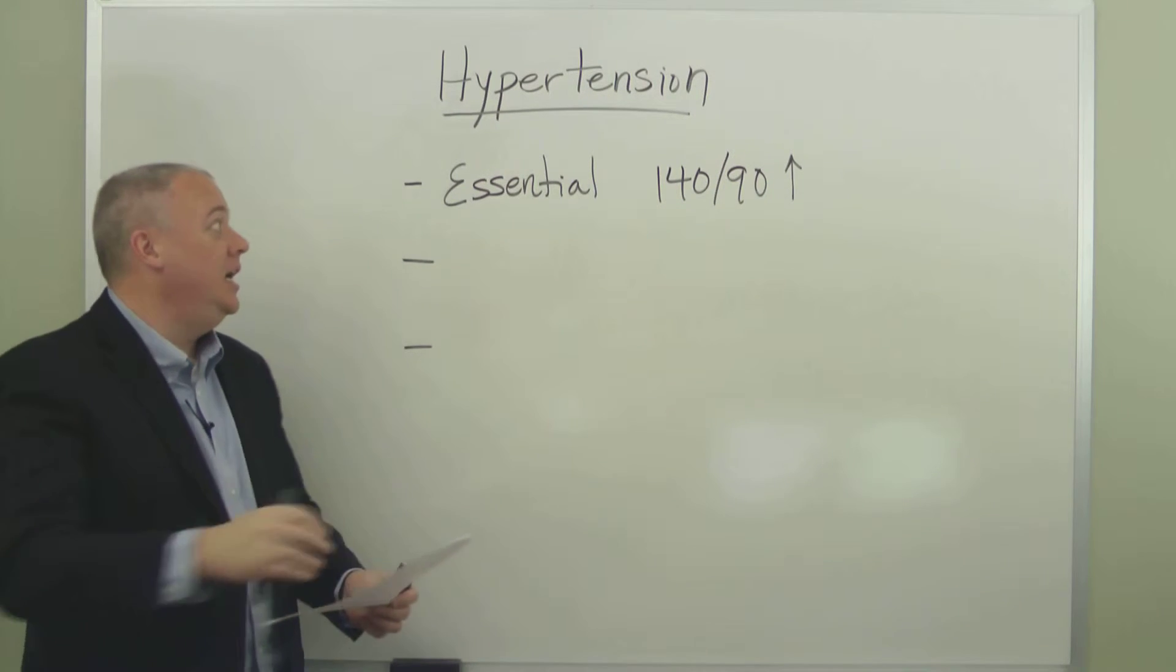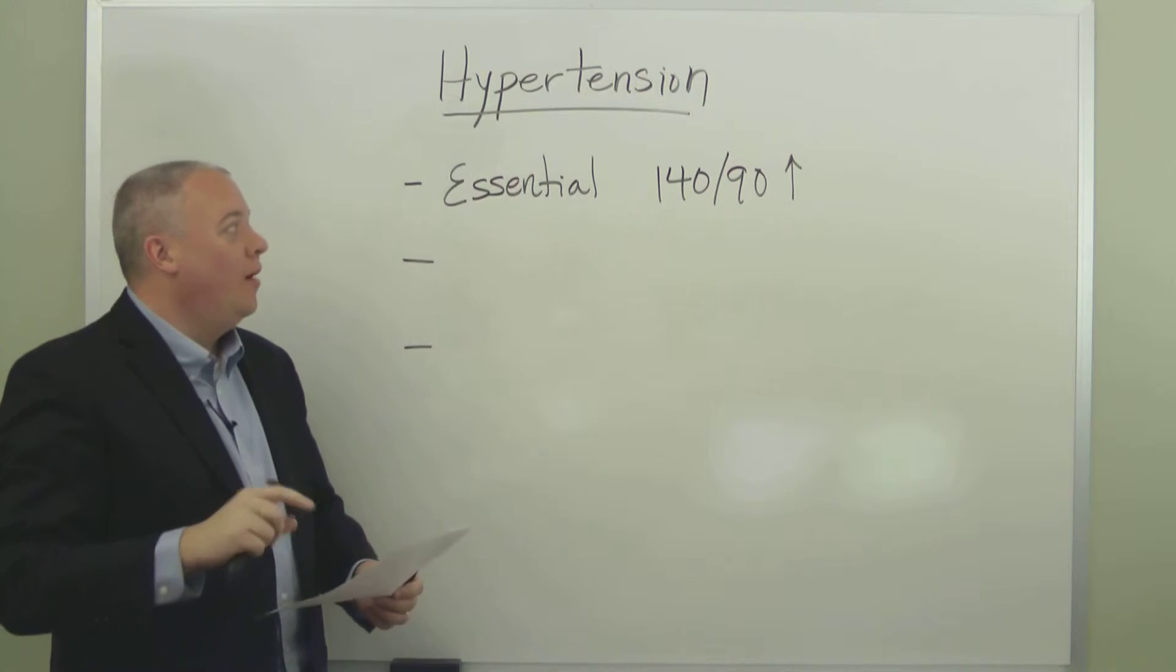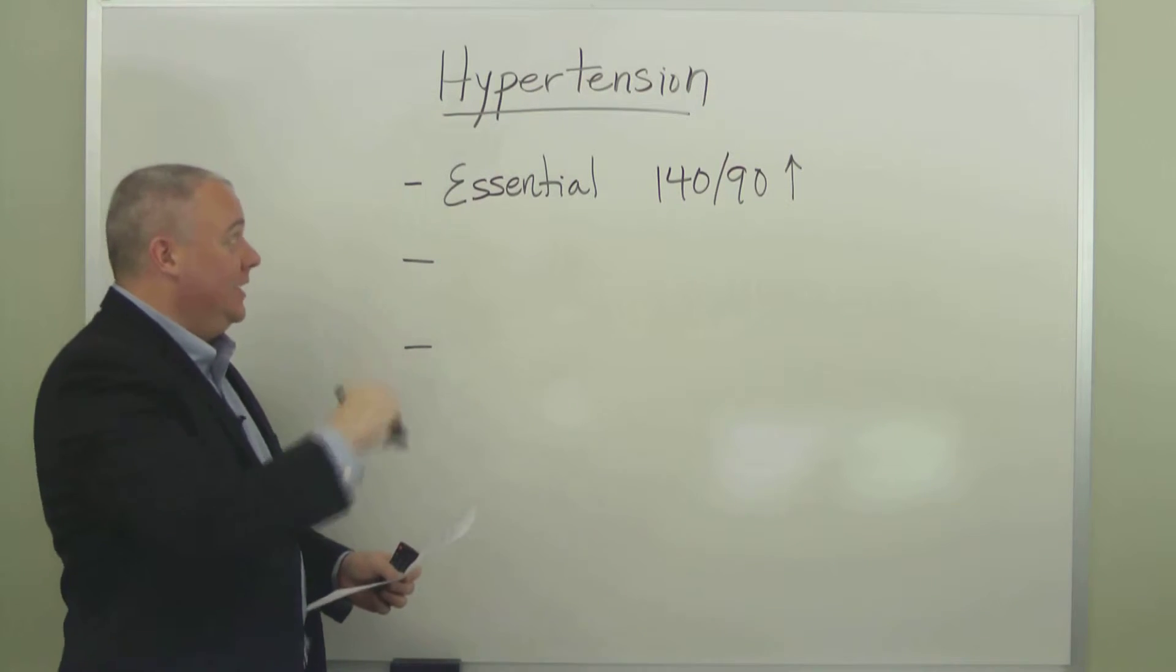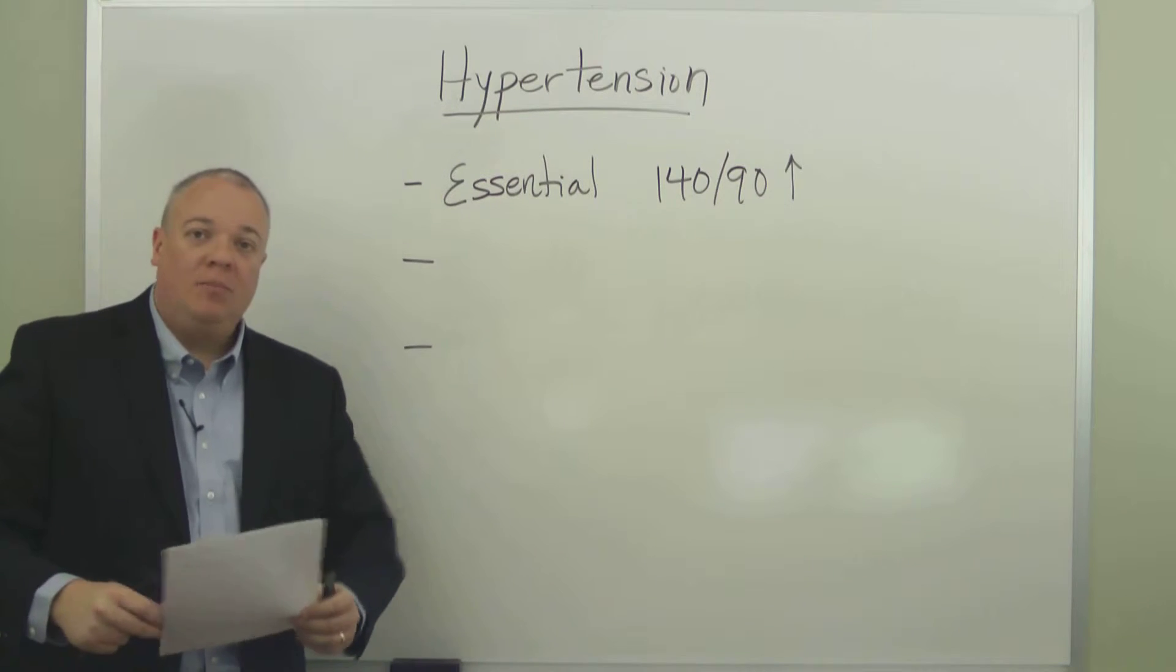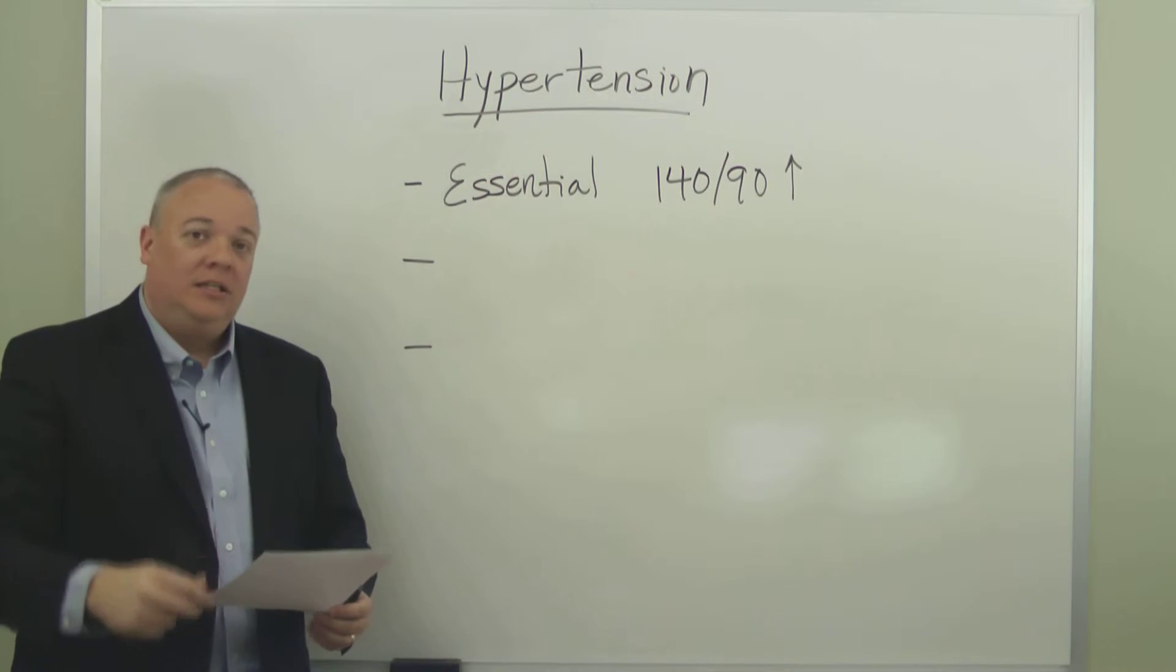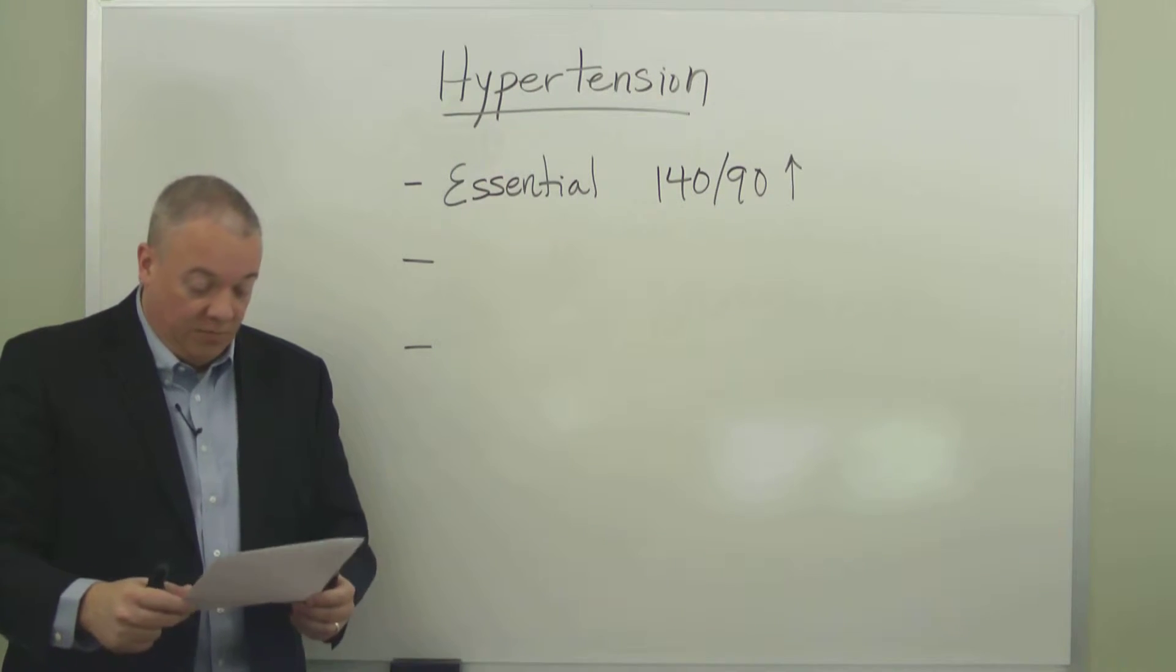They have three separate occasions of a blood pressure reading of 140 over 90 or higher. They have essential hypertension. Most people are unaware of it until it has been diagnosed in this manner.